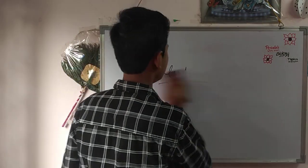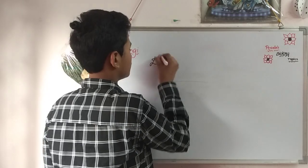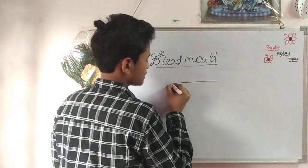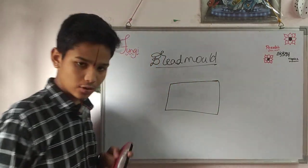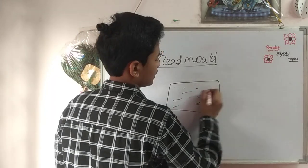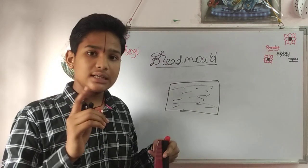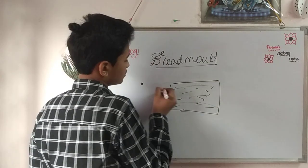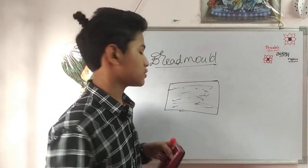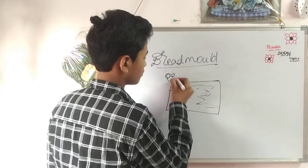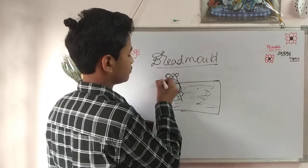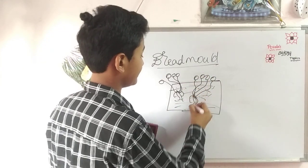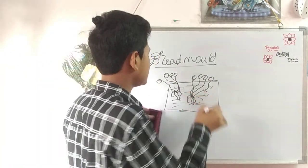Now we are going to look at the bread mold. To observe bread mold, take a slice of bread and pour some water on it. Keep this slice of bread in a cool and moist place. After a few days, take this bread slice and observe it under the microscope. You can see some hyphae growing on the slice of bread.